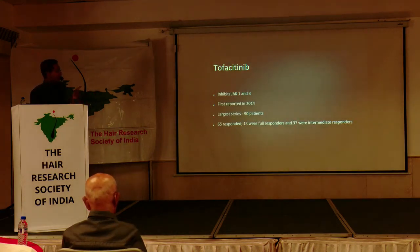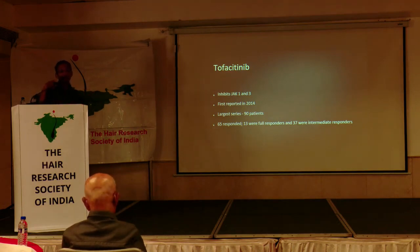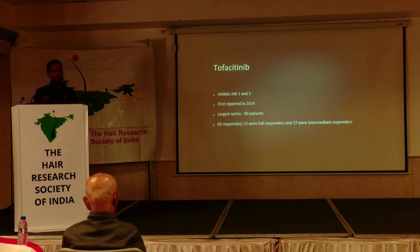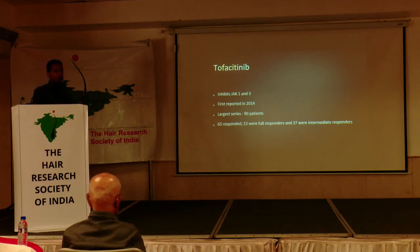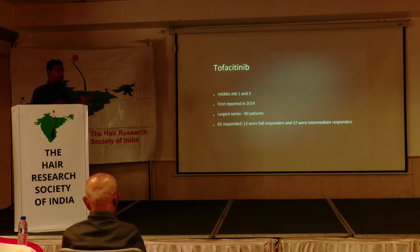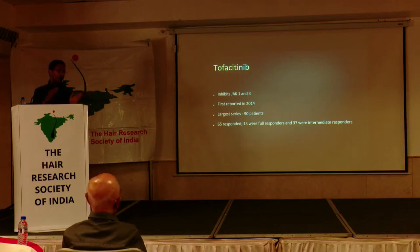Tofacitinib is the oldest one, first reported in 2014. Most JAK inhibitors were actually used for something else — for example, tofacitinib was used for psoriasis but was found to also work for alopecia areata. It works against JAK1 and JAK3. The largest series was 90 patients with fairly good results: about 65 responded — a 75% response rate — of which 13 were full responders with complete hair growth and 37 were intermediate responders with about 50% hair growth.